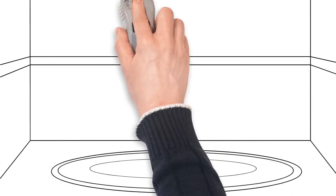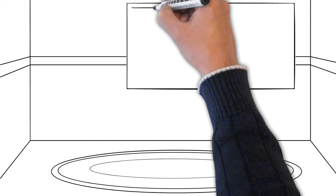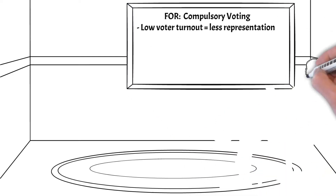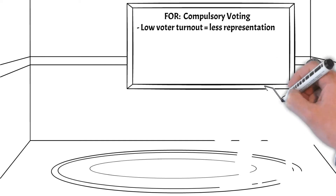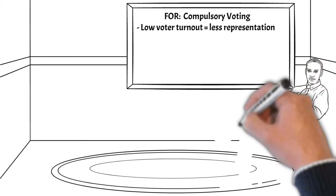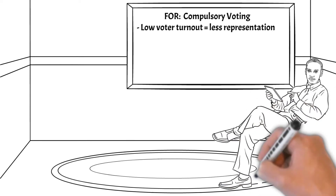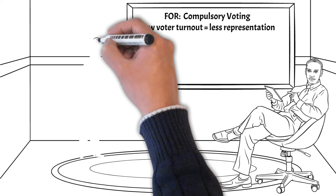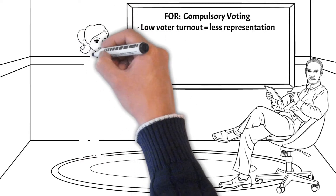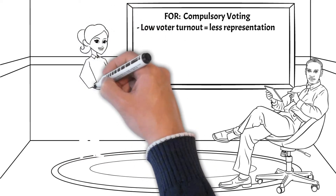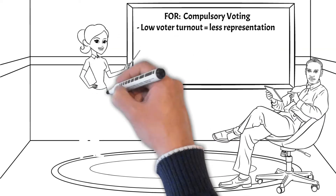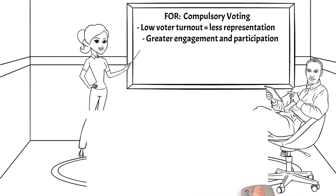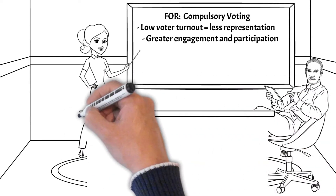Low voter turnout equals less representative government, which makes the practical functionality of democracy more difficult and less effective. This is one of the simplest and most basic of all civic responsibilities — a duty to have an opinion. You play a small role in the making of the country, and the country contributes to who and what you are. Part of the reason for the introduction, from an Australian point of view, was to increase engagement and participation in the administration and running of the state by the public.